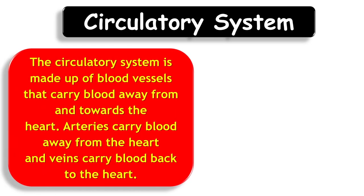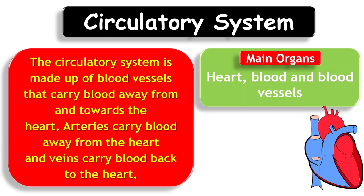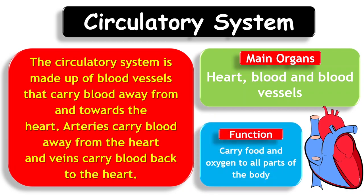Circulatory System. The circulatory system is made up of blood vessels that carry blood away from and towards the heart. Arteries carry blood away from the heart and veins carry blood back to the heart. Main organs: heart, blood, and blood vessels. Function: It carries food and oxygen to all parts of the body.